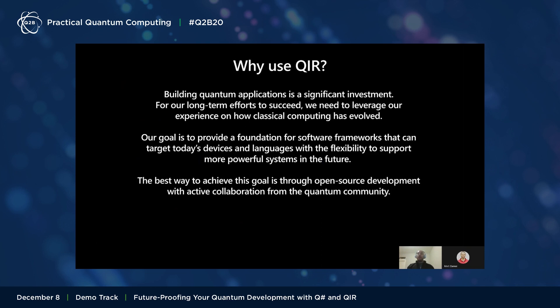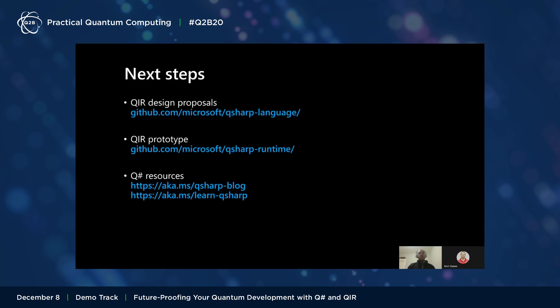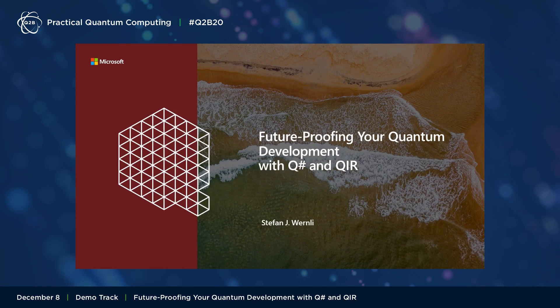Just as importantly, we're getting the word out now so that QIR can truly be a community-driven effort built with active collaboration and feedback from developers all across the industry. I highly encourage you to check out the Q# language repo on GitHub, where you will find the proposals and design for QIR, as well as the Q# runtime repo which includes an early prototype demonstrating the usage of QIR with the LLVM and Clang toolchains. If you'd like to learn more about Q# specifically, we have excellent resources in our Q# blog and the new Q# learning module. Thank you for your time today, and I look forward to seeing your contributions to Q#, QIR, and the future of quantum computing.